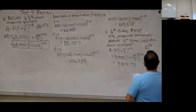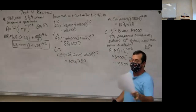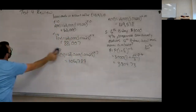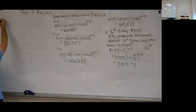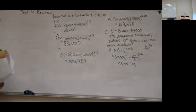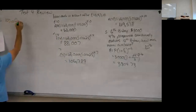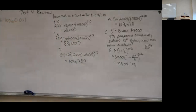Now it's time to use the calculator for all these logarithms. We have log base 10 of 0.001. Since it's log base 10, the log button on the front of the calculator works. Just punch in 0.001 and hit Enter — you get negative 3.